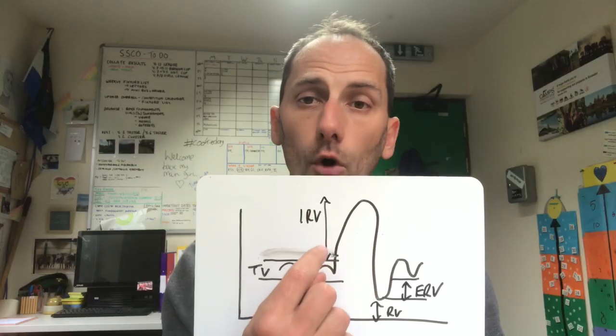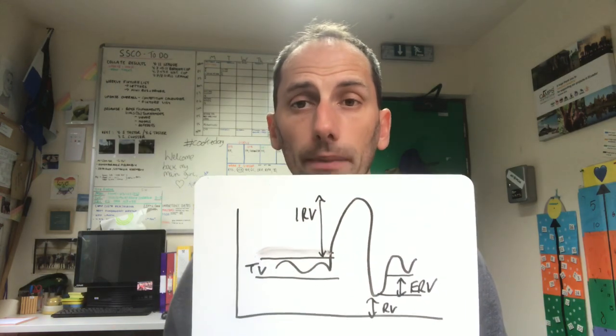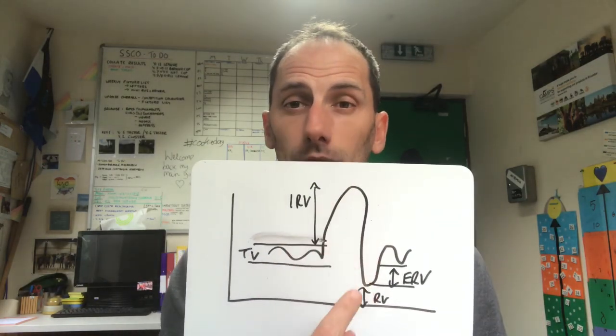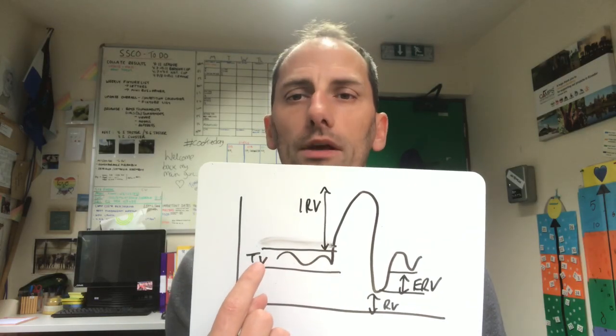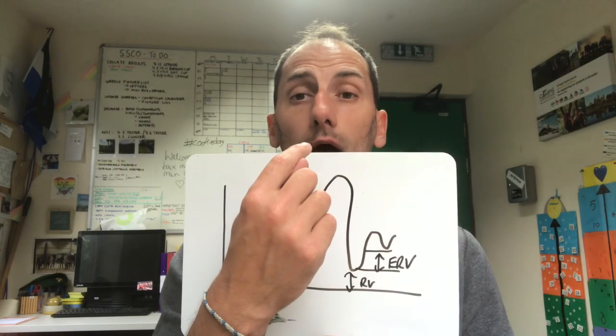That brings us on to the different volumes. We've got our inspiratory reserve volume, which you might see as IRV, and our expiratory reserve volume, which we might call ERV. These are the amount of air we can forcefully inhale or exhale in addition to tidal volume. So if I take a big forceful deep breath in, that's the IRV — the line going up means we're breathing in. When the line goes down we're breathing out. Expiratory reserve volume is the amount of air we can forcefully exhale in addition to tidal volume, and that's the ERV.